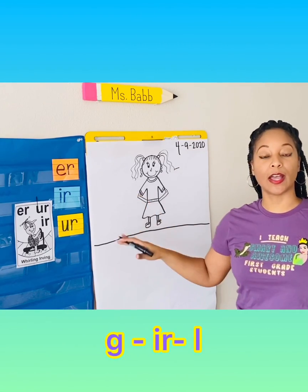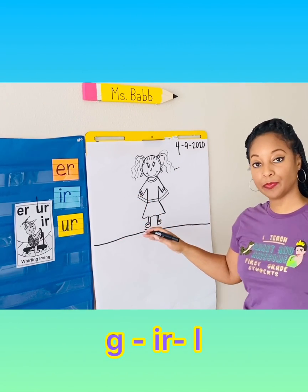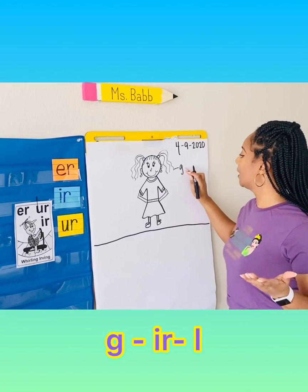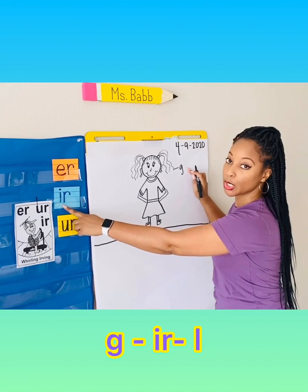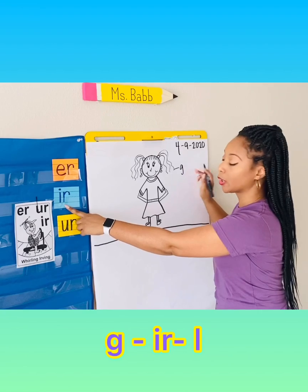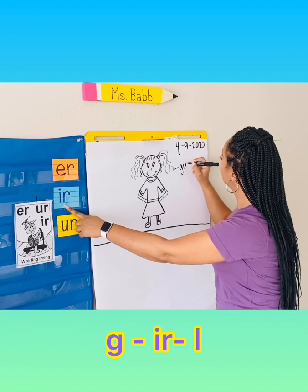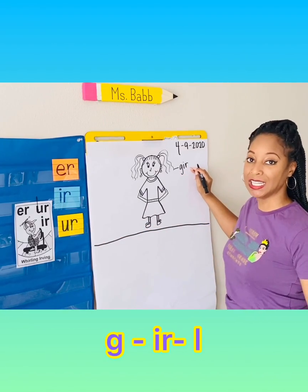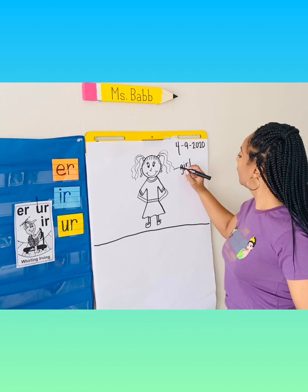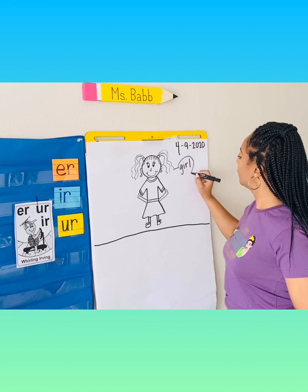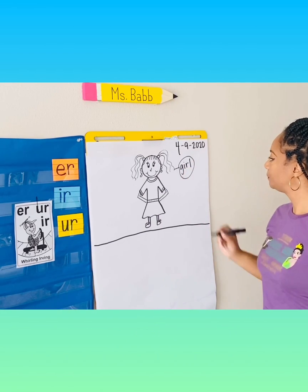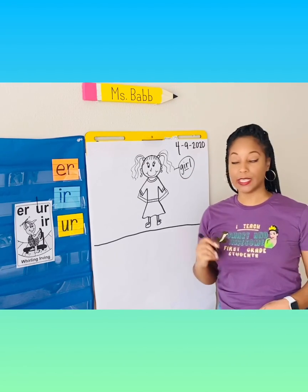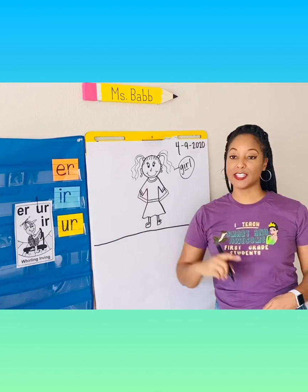Girl has the IR sound in it, so we're going to label that. G-U-H, what's the first sound? G. Then UR — I-R. G-UR-L. L. And label it. Nice job. We also want to underline that IR in that word to indicate that that's what we're studying.